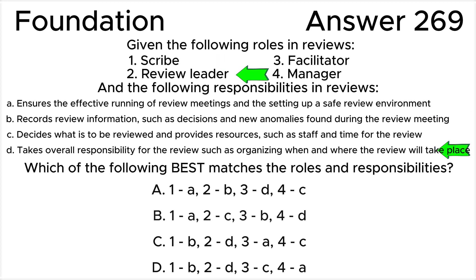Role two — review leader — is responsible for overseeing the review process, such as selecting the review team members, scheduling review meetings, and ensuring that the review is completed successfully. Review leader corresponds to option D: takes overall responsibility for the review, such as organizing when and where the review will take place.